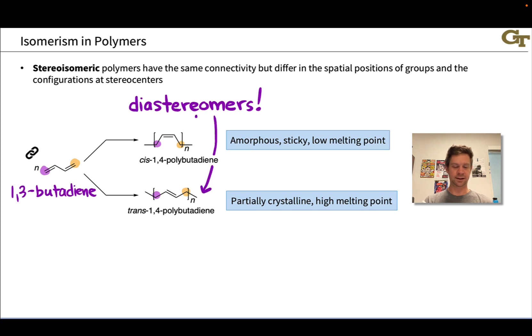They have the same connections, same numbers and types of atoms since they're both polymers of 1,3-butadiene, and the same bonds in two dimensions, but different structures in three-dimensional space. Because the trans 1,4-polybutadiene has a more regular zigzagging structure, with that trans double bond fitting in nicely with the zigzag structure of the saturated centers, trans 1,4-polybutadiene is actually partially crystalline and has a high melting point.